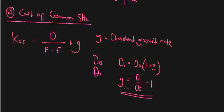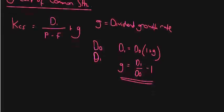Obviously these are percentages. D is also a dollar figure. P minus F will both be dollar figures. That's the cost of common stock. Now, let's move on to number four, the final one, which is our cost of retained earnings.